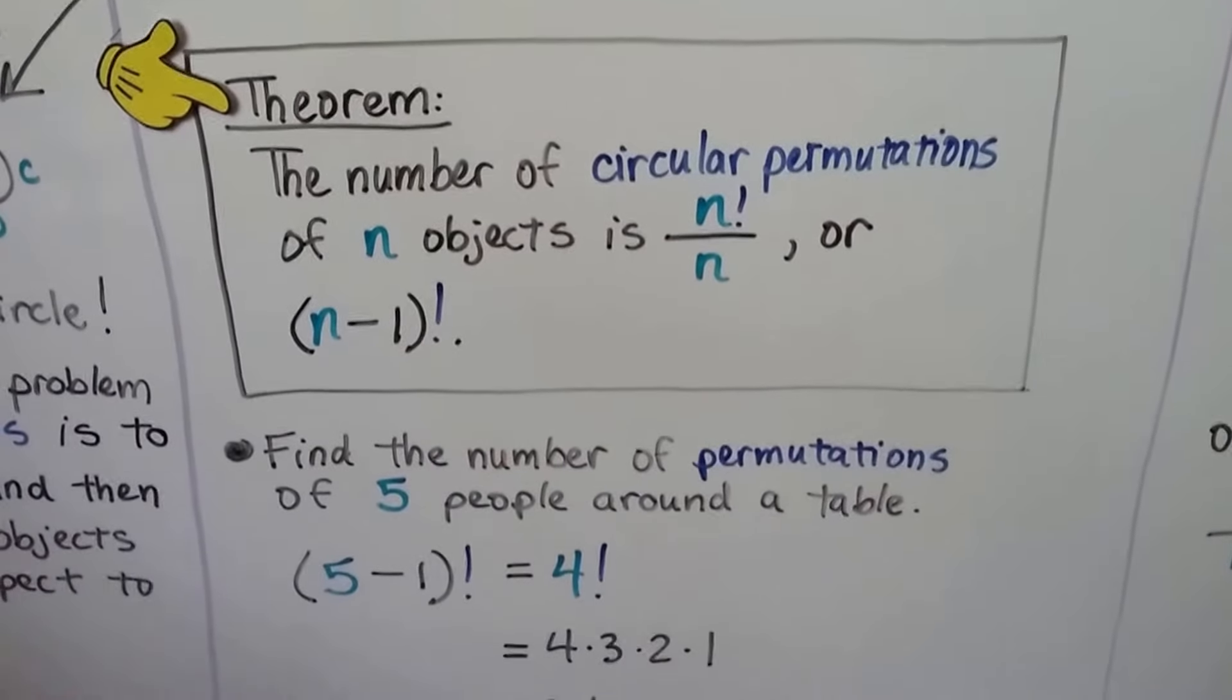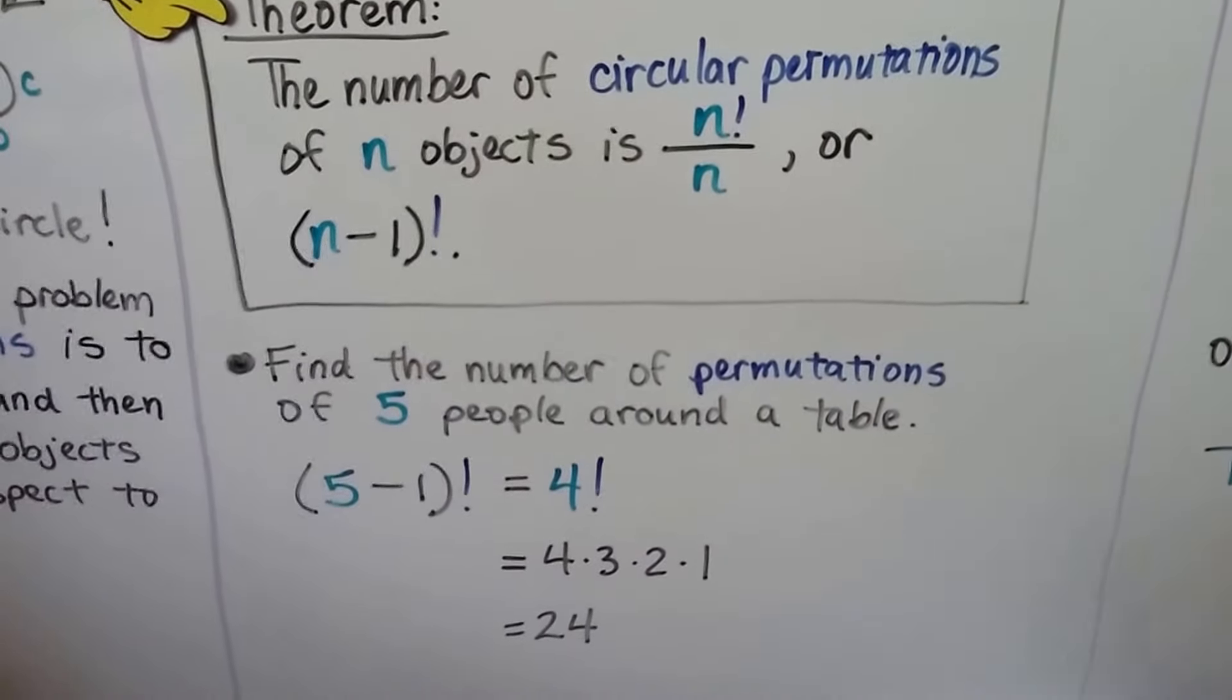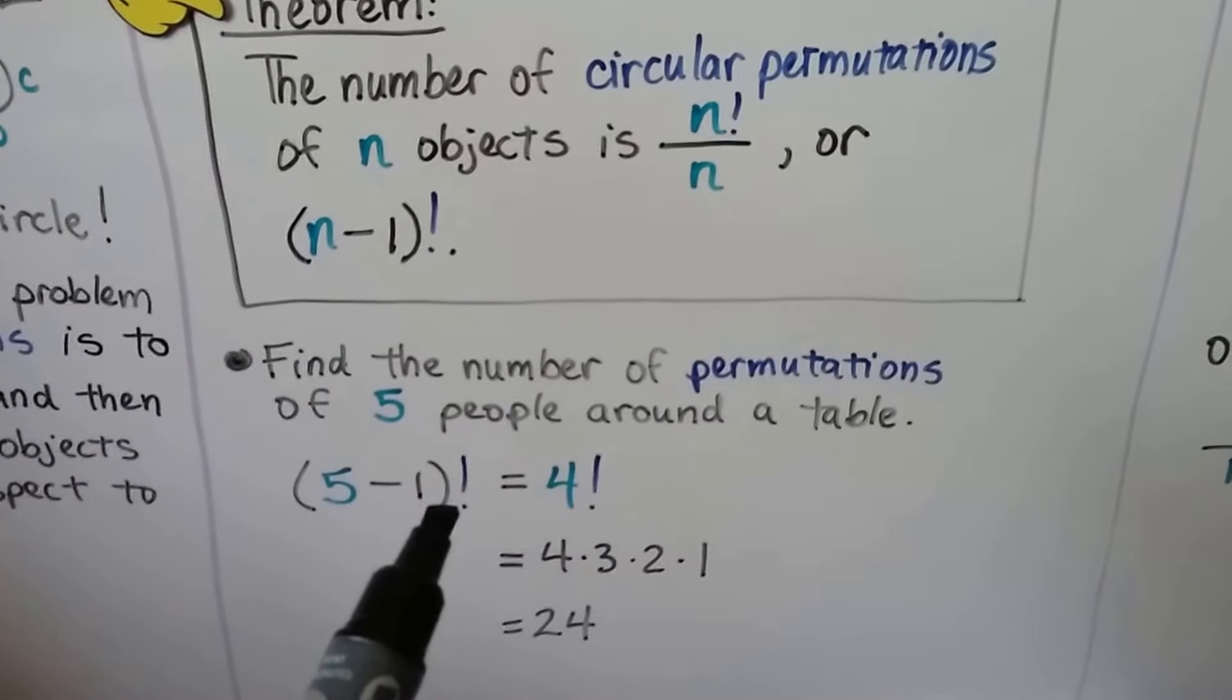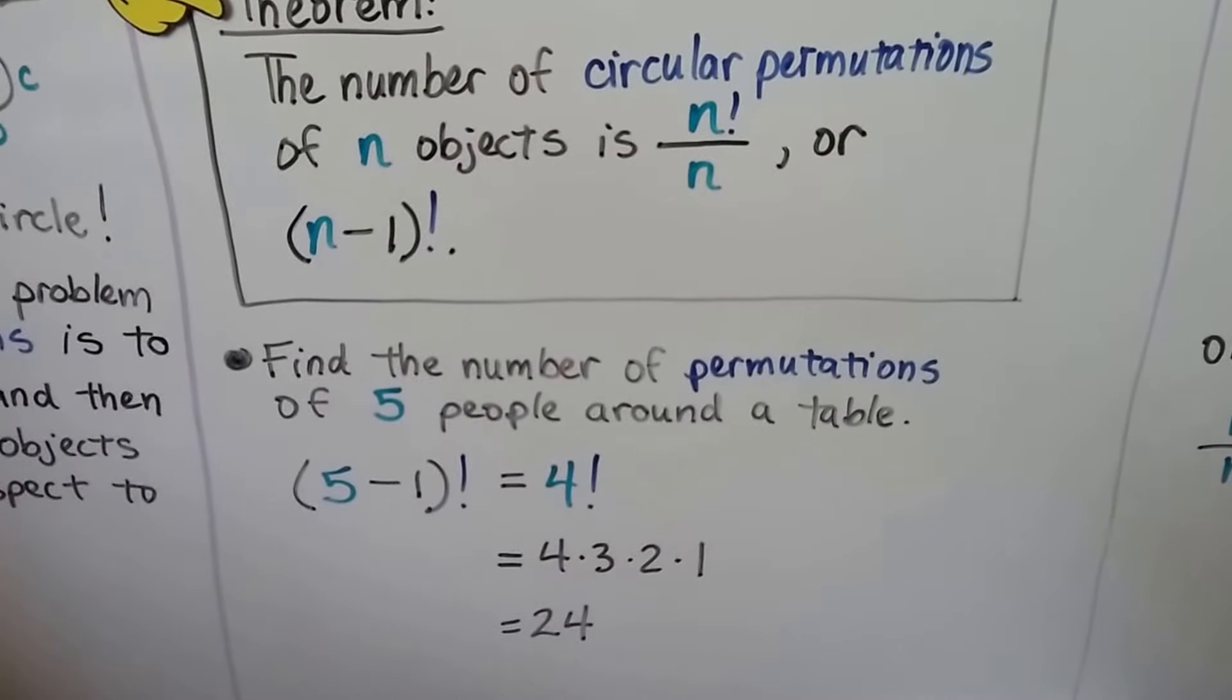We can find the number of permutations of five people around a table. We just do (5-1) factorial, which is 4 factorial, which is 24.